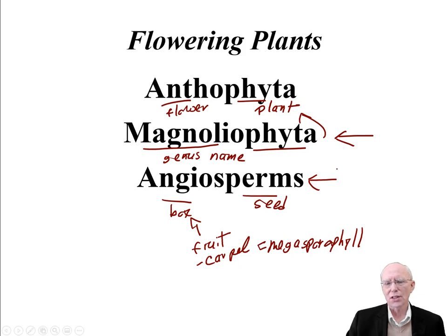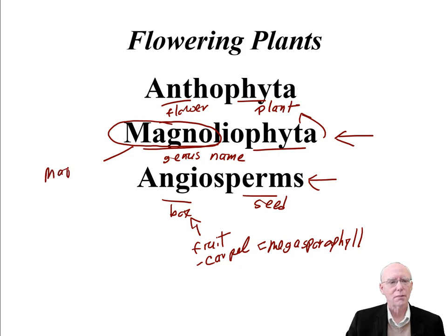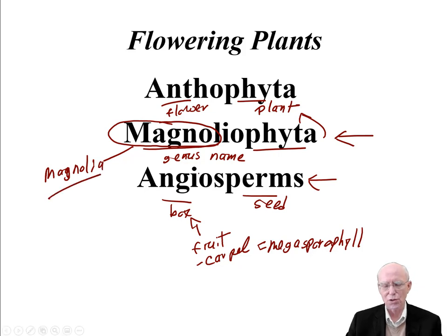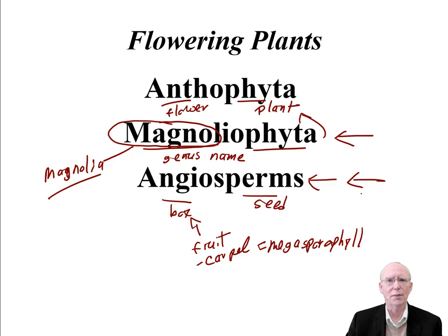The code suggests using names for taxa based on a genus name, and this is based on the genus name Magnolia. But this name is not in common use. Most people call these plants the angiosperms because that name has been around for a very long time — hundreds of years.